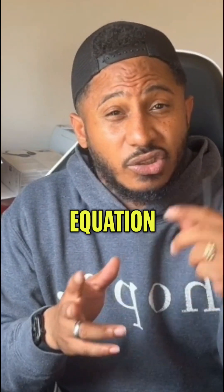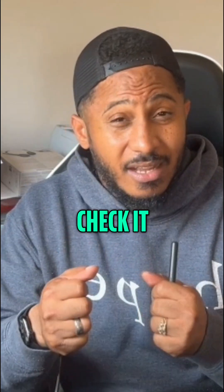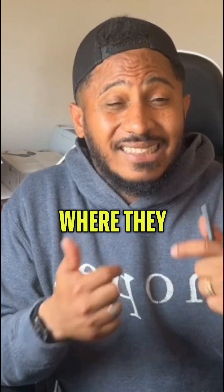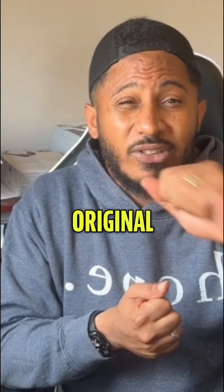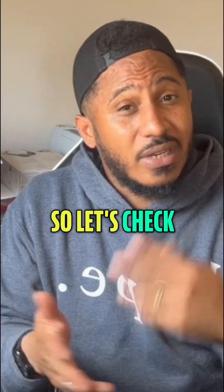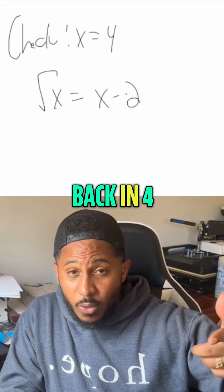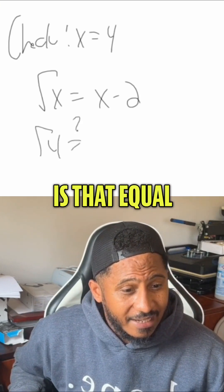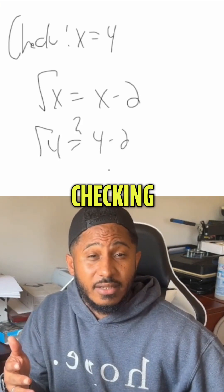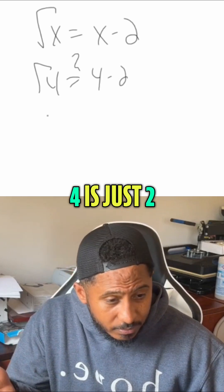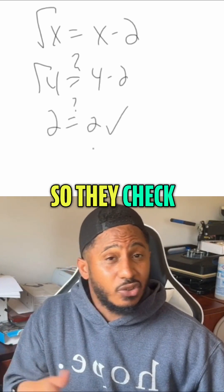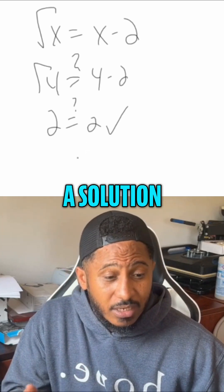But again, because our original equation started with a square root, we have to check it. That's called extraneous solutions. Sometimes extraneous solutions can occur where they seem like a solution, but if we go back to the original equation, they're just not. So let's check it. Plugging back in 4, the square root of 4 is 2. Is that equal to 4 minus 2 which is 2? Yes, these are equal. That solution checks out, meaning 4 is a solution.